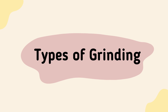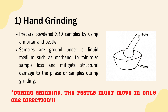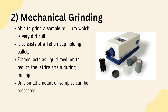Types of grinding. Firstly is hand grinding. The powdered XRD samples are prepared by using pestle and mortar. The samples are ground under a liquid medium such as methanol to minimize sample loss and mitigate structural damage to the phase of samples during grinding. Secondly is mechanical grinding. It is able to grind a sample to 1 micrometer. Ethanol acts as a liquid medium to reduce the lattice strain during milling. It consists of a Teflon cup holding pallets, and only a small amount of samples can be processed.